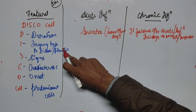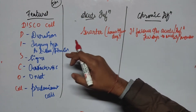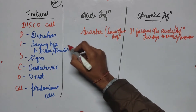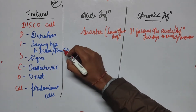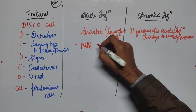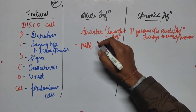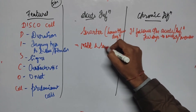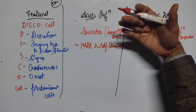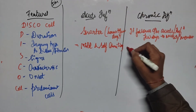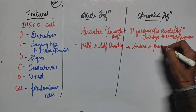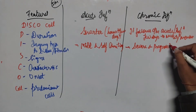Regarding Injury type to the tissue: in acute inflammation, the injury is very mild and self-limiting — it does not progress to other organs. In chronic inflammation, the injury is severe and can be progressive, spreading to other organs.